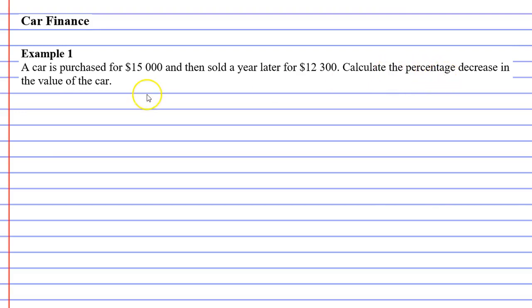So first of all, we need to figure out what the percentage decrease is. And that's just a quick simple subtraction. It was originally $15,000 and it decreased by $12,300. So when we subtract them, we get $2,700.